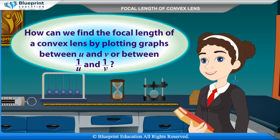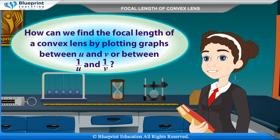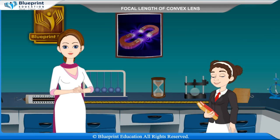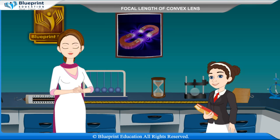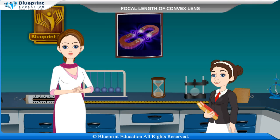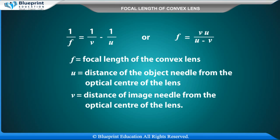How can we find the focal length of a convex lens by plotting graphs between U and V or between 1/U and 1/V? The relation between U, V and F for a convex lens is given by 1/F = 1/V − 1/U, or F = VU / (U − V).